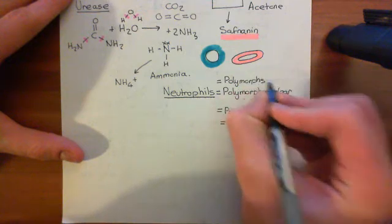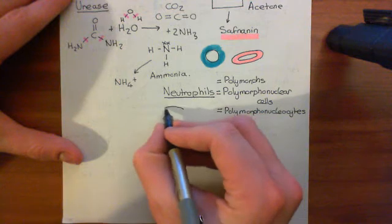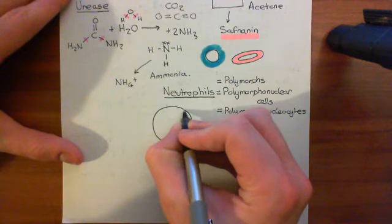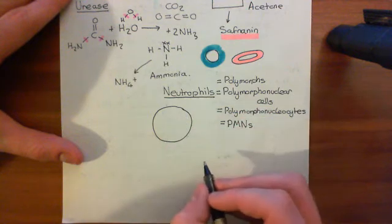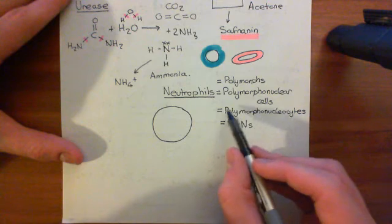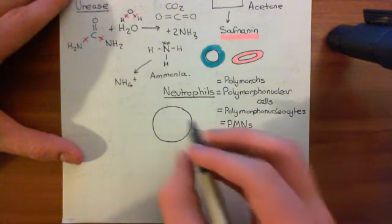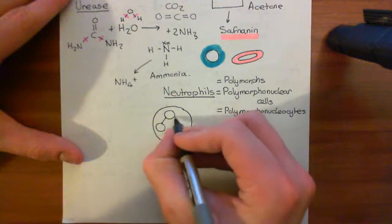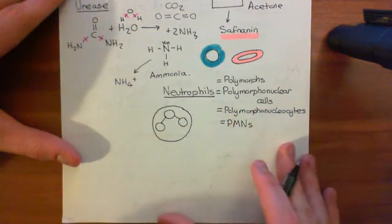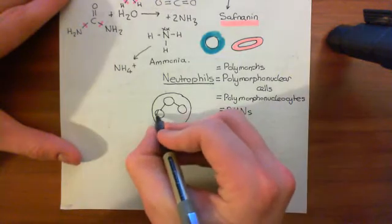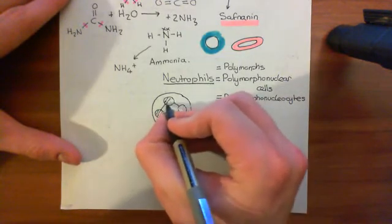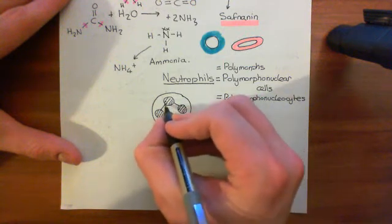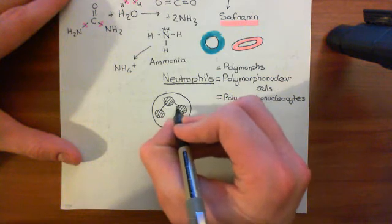Now let me show you the structure of a neutrophil, and then we'll discuss what they do. So the characteristic feature of neutrophils is that they have a multi-lobe nucleus that can take many different structures. Hence, the polymorphonuclear. Now the archetypal number of lobes for a neutrophil nucleus to have is three.